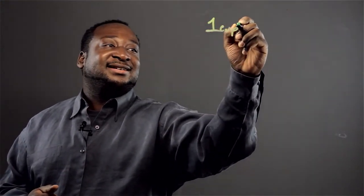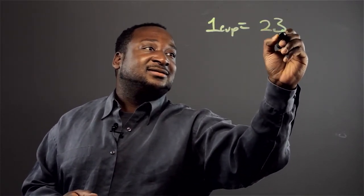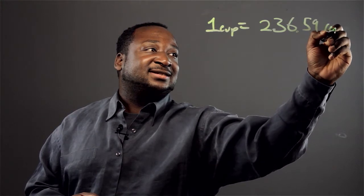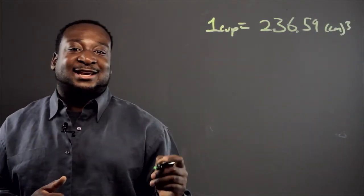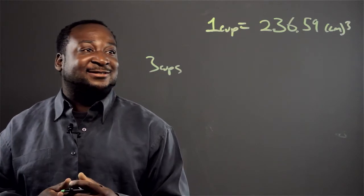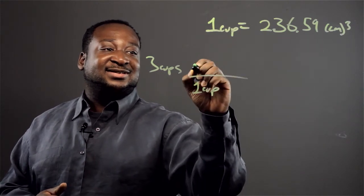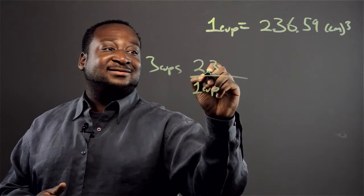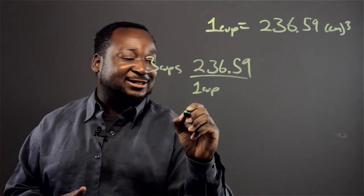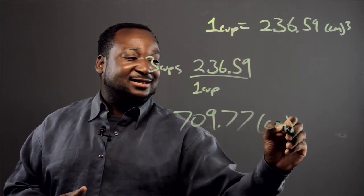We know that one cup is equivalent to 236.59 cubic centimeters. So let's say we have three cups and we want to convert that to cubic centimeters. We just multiply: one cup is equivalent to 236.59 cubic centimeters, so three cups equals 709.77 cubic centimeters.